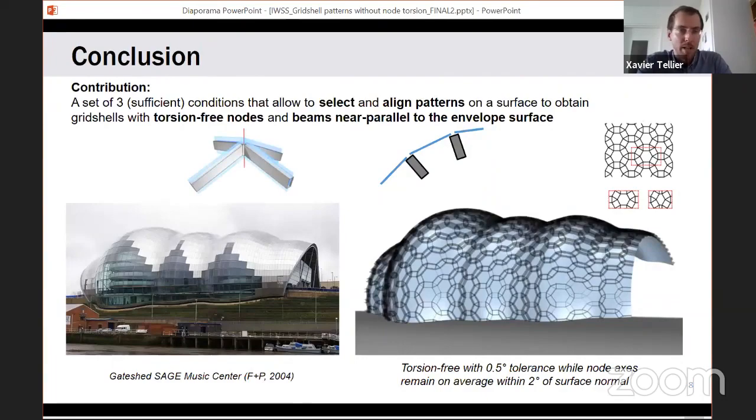I will end on this concluding example. We recreated the geometry of the Sage Music Center by Foster and Partners, and by putting on it this pattern composed of hexagons, squares, and triangles that fulfills the rule, we can manage to get this pattern that is torsion free here with just a 0.5 degree tolerance and where the beams always stay within two degrees of the normals. Thank you for your attention and I will be glad to take questions if there are any. I have not seen any popping up on my screen.